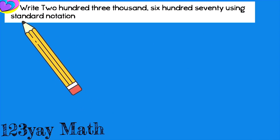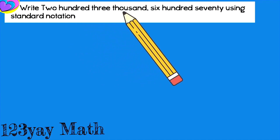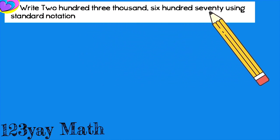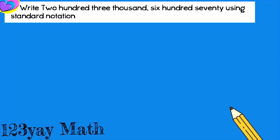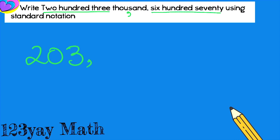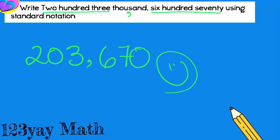The question says: write 203,670 using standard notation. How do we do that? It's very, very simple. We're going to say 203,000 — when you see 'thousand,' that's a comma. So, 203,670. And that's that. As simple as that. Let's solve the next one.